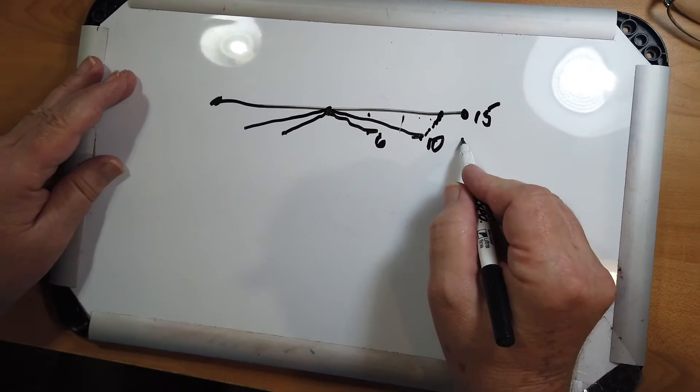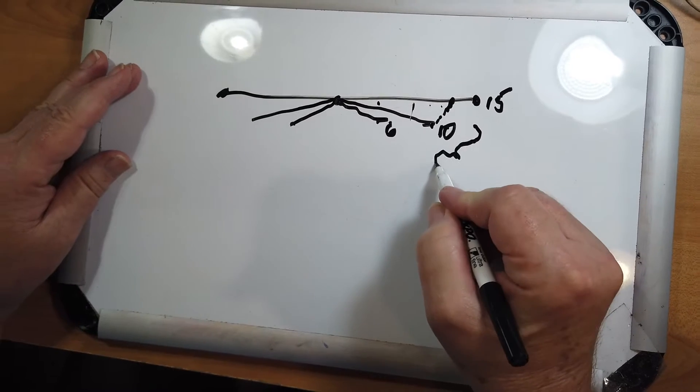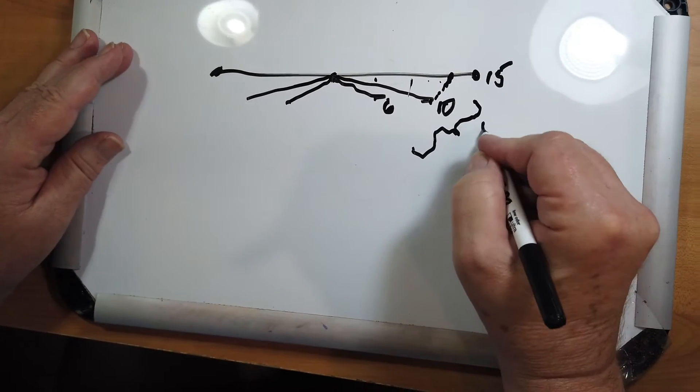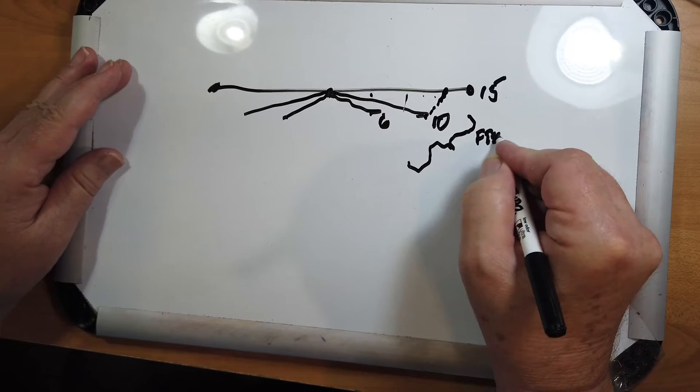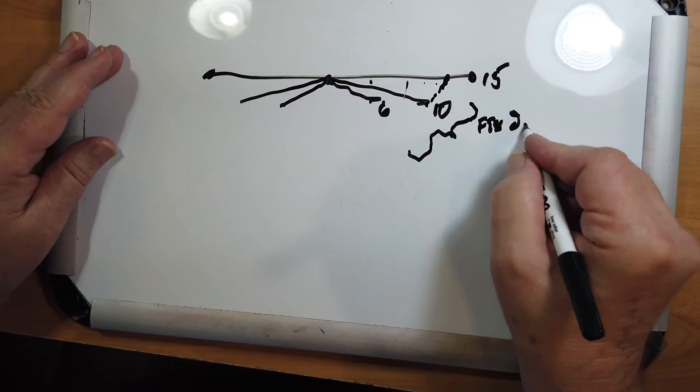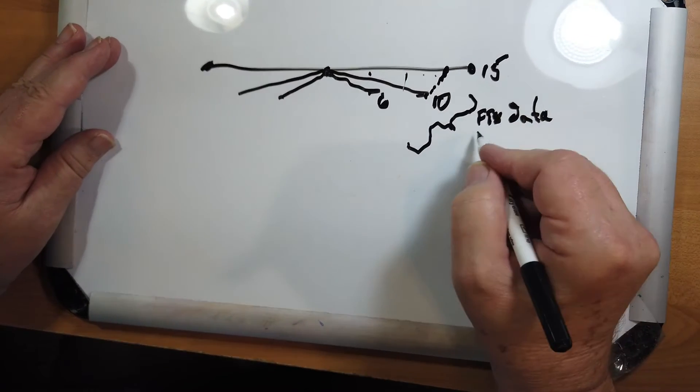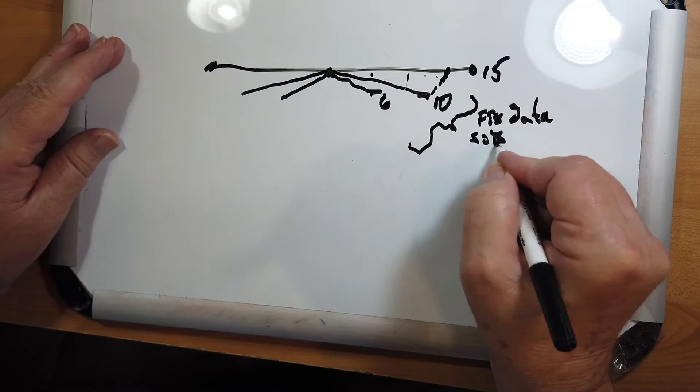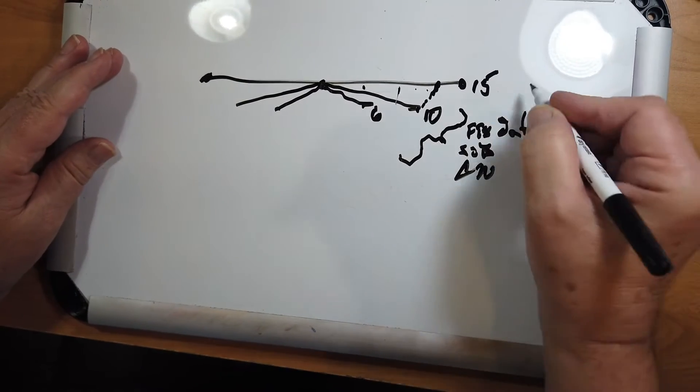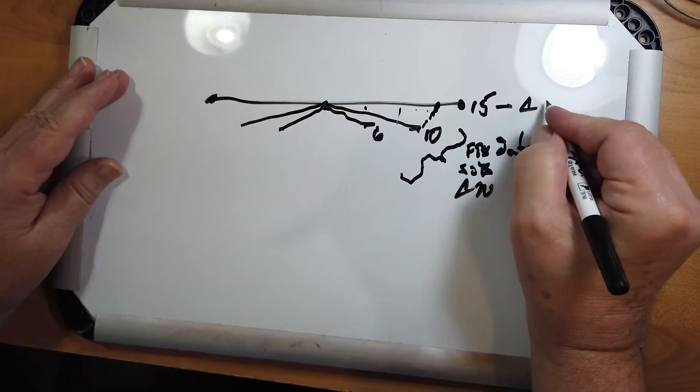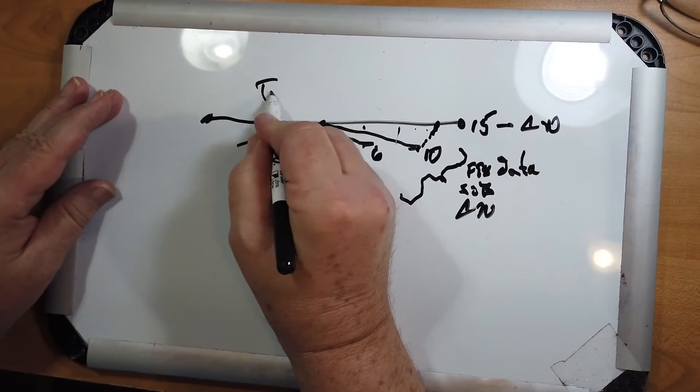Now, your privileges right now cover a lot of stuff on 10 and 6. You can do FT8. You can do other data modes. You can do single sideband and CW. The only thing you can do on 15 is CW with a tech license.